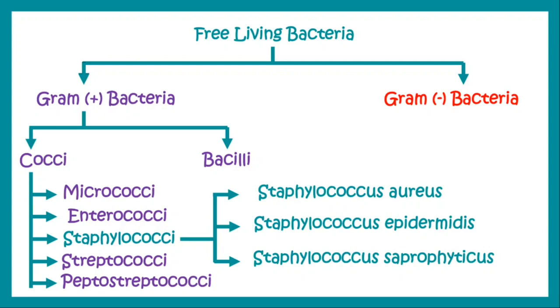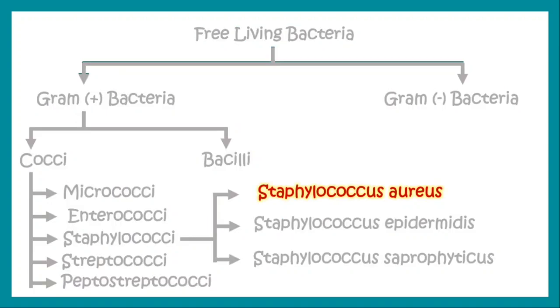Staphylococci has three main medically important bacteria within it. One is known as Staphylococcus aureus, another one is Staphylococcus epidermidis, and Staphylococcus saprophyticus. Today we will focus on Staphylococcus aureus.